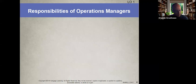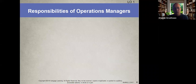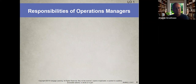One of the most important OM gurus mentioned in the book is Taiichi Ohno — know him for the test. He's essentially a god in operations management. Deming, though not covered in this book, was equally influential.